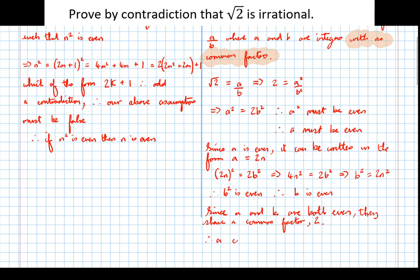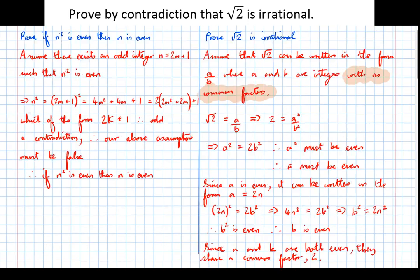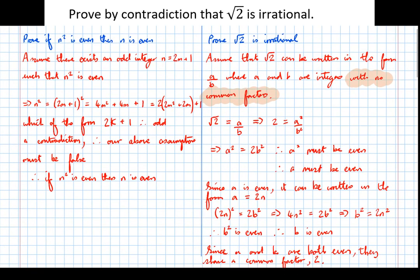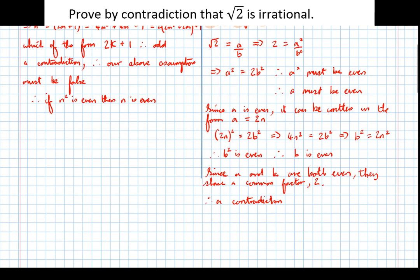Therefore a contradiction. So we've disproven our nonsensical assumption here, assume that it's rational, we've disproven that bit. Therefore the opposite must be true, therefore root 2 must be irrational.